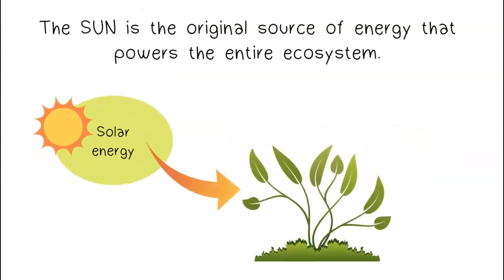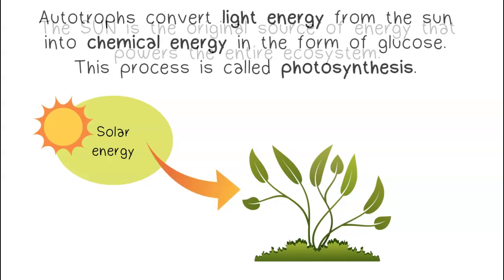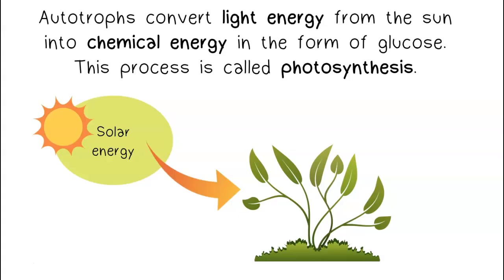The sun is the original source of energy that powers the entire ecosystem. Autotrophs convert light energy from the sun into chemical energy in the form of glucose. This process is called photosynthesis.